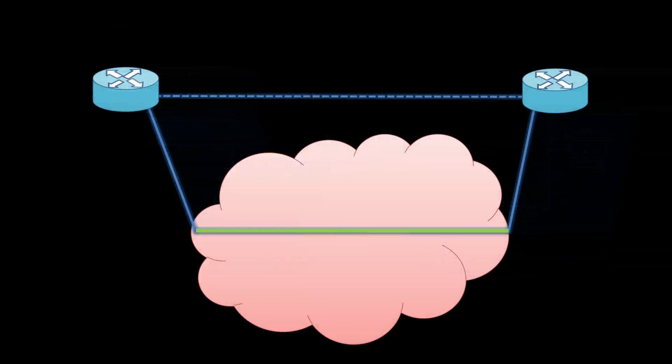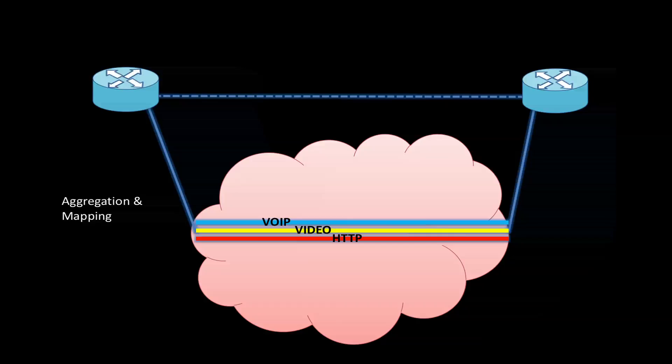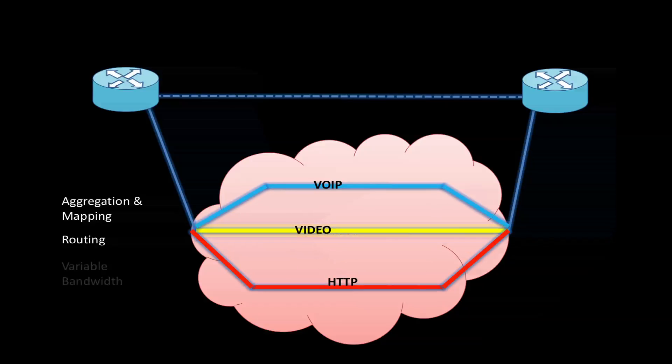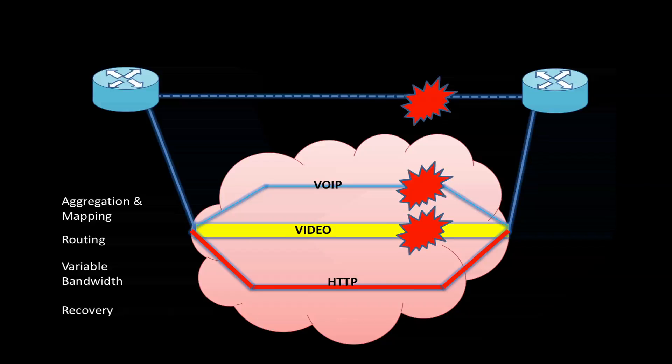An example of a network application could be one that aggregates traffic in the packet switches and maps them onto different circuits depending on the traffic type. Then those circuits can have different characteristics suitable for the traffic type. They could be routed differently, or given different variable bandwidths, or different recovery mechanisms.